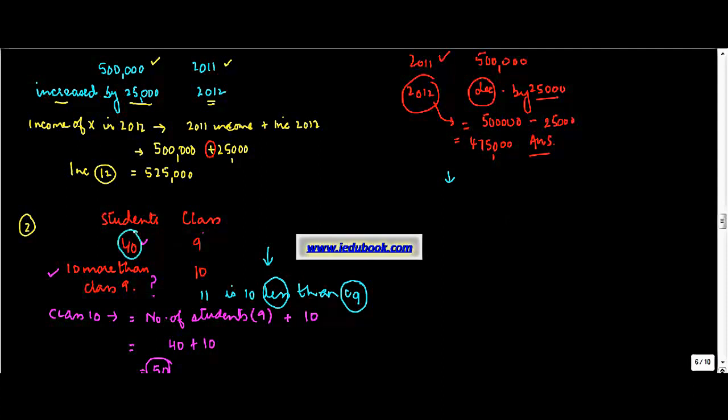So let us say we are computing it for class 11. Class 11 is equal to class 9 less 10. How much do we have in class 9? We know class 9 is 40 minus 10 equals 30. So the number of students in class 11 is equal to 30.